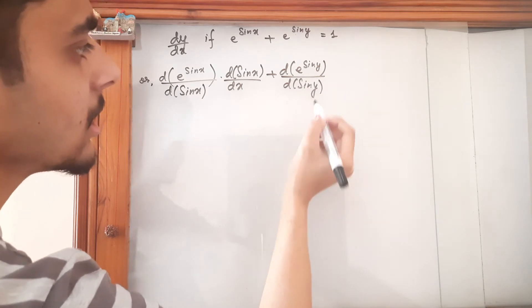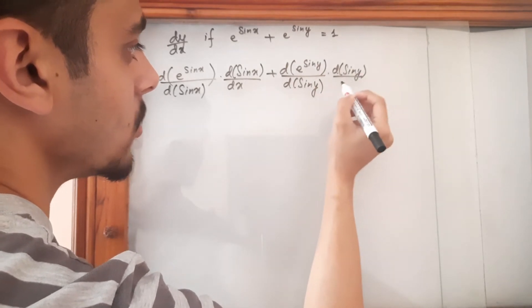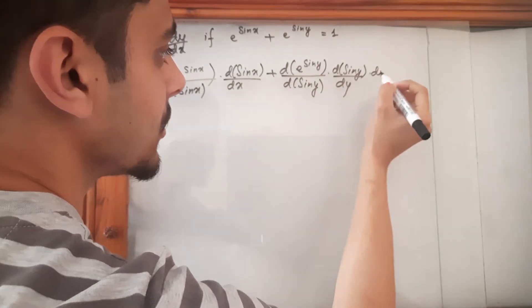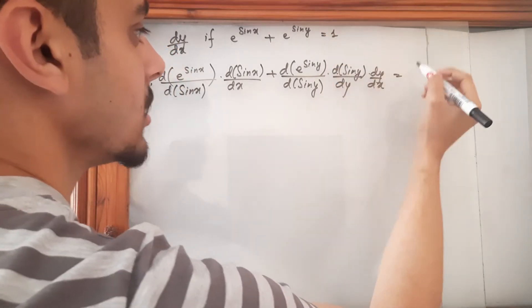It's just a chain rule then sine y with respect to y and then y with respect to x again. This is a constant so it becomes 0.